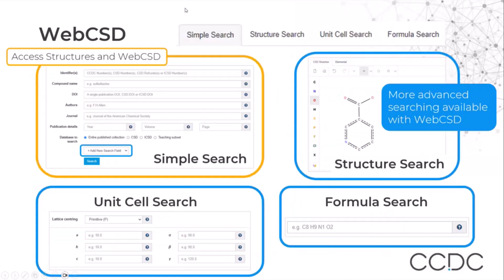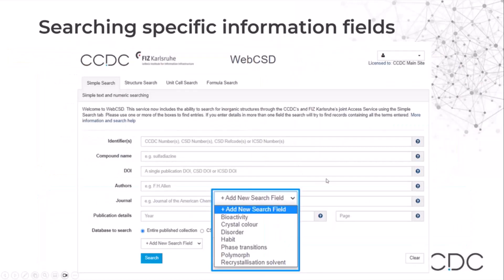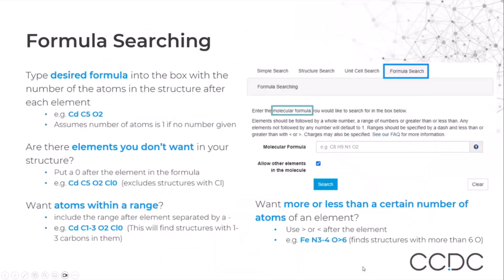Once you can access web CSD, you have access to a range of searches from formula search, unit cell search, structure search. In the simple search, you will see that you have additional fields for search. You will see that at the bottom of the simple search interface, you now have add new search field, and from the dropdown, you can select new search fields to add including bioactivity, crystal color, and so on.